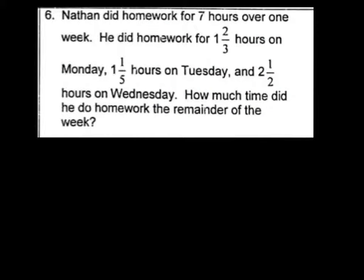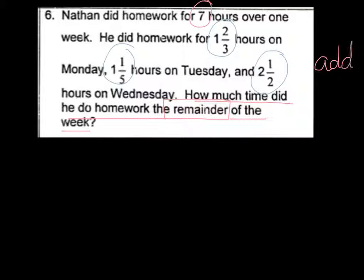Number five. Nathan did homework for seven hours over one week. He did homework for one and two-thirds hours on Monday, one and one-fifth hours on Tuesday, and two and a half hours on Wednesday. So we know that these are all being combined, and then we're going to subtract it from seven because it says how much time did he do homework for the remainder of the week. That's a clue that we've got to figure out the missing amount. So our plan would be to add how much he did and then subtract from the total. So this is a two-step problem where we have to add and subtract.